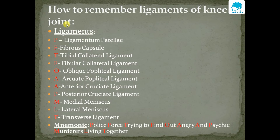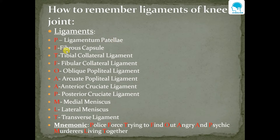The knee joint is supported by 11 ligaments, so it's very difficult to remember all these ligaments. We can remember them by using one mnemonic: 'Police Force Trying to Find Out Angry and Psychic Murderers Living Together.' Here P stands for ligamentum patellae, F for fibrous capsule, T for tibial collateral ligament, and F for fibular collateral ligament.